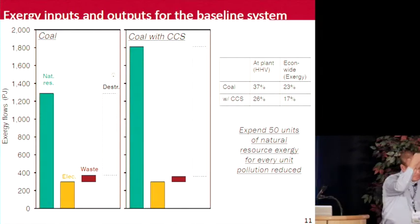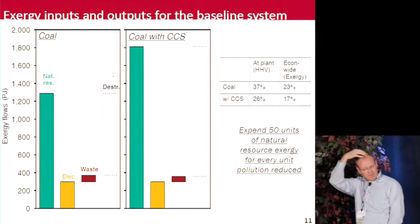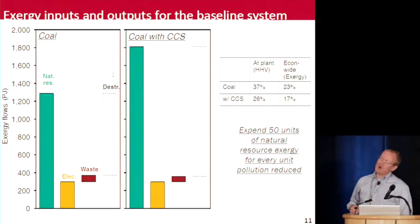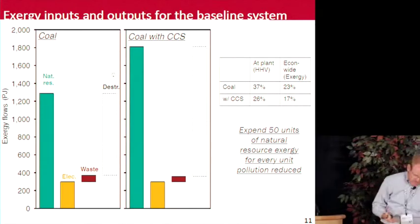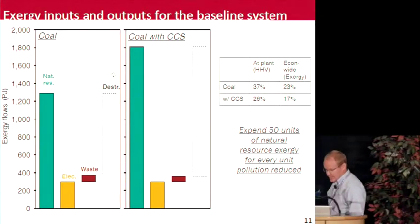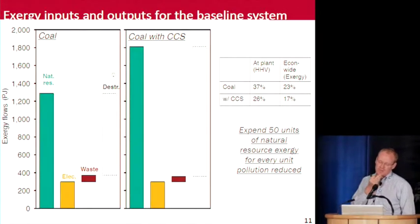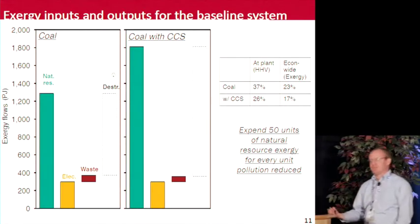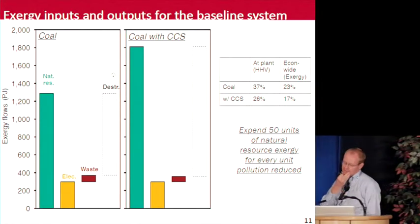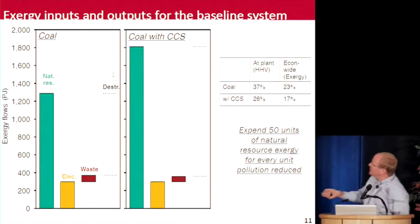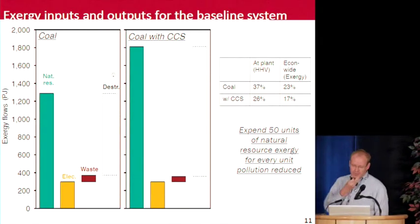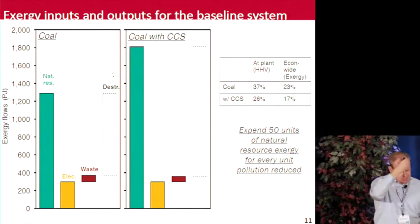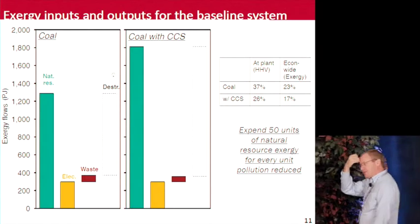The plant higher heating value efficiency reported in the NETL baseline for coal was about 37%, dropping to about 26% when we add CCS. Taking an economy-wide exergy efficiency — the exergy content of electricity sold at the plant gate divided by the exergy content of all natural resources brought in, including coal, iron ore, and everything required to build and operate the plant — these economy-wide exergy efficiencies drop from 23% to 17% without and with CCS. In fact, we had to expend 50 units of natural resource exergy for every unit of pollution reduced.